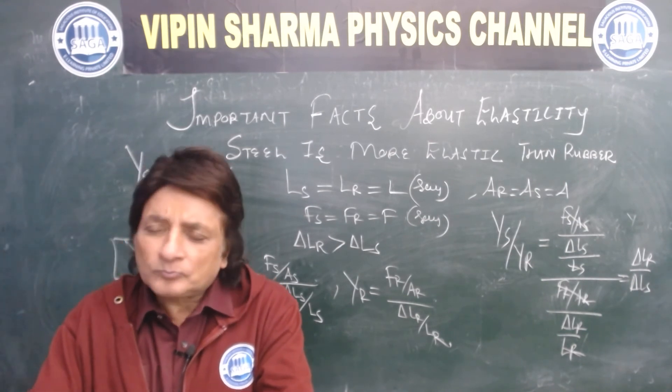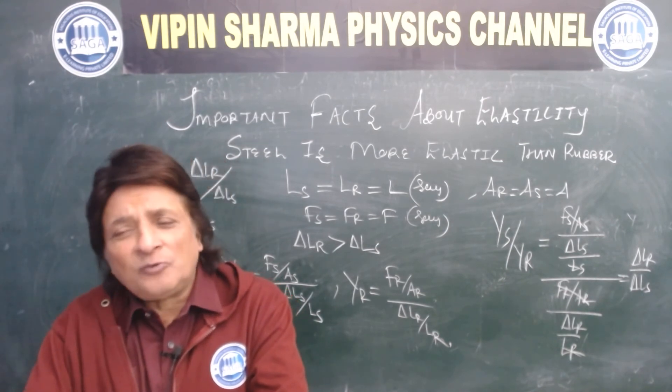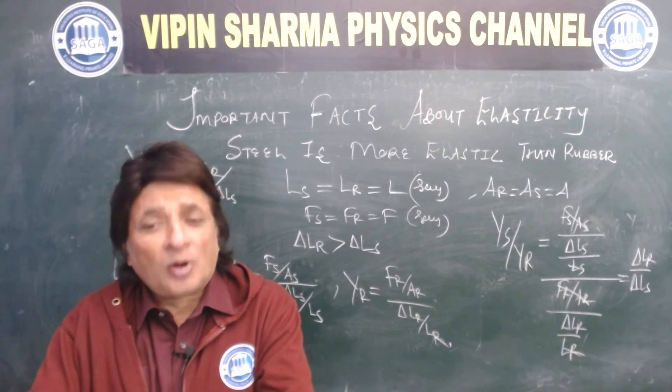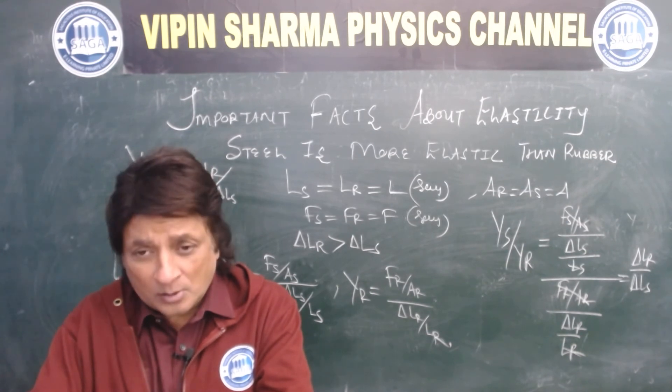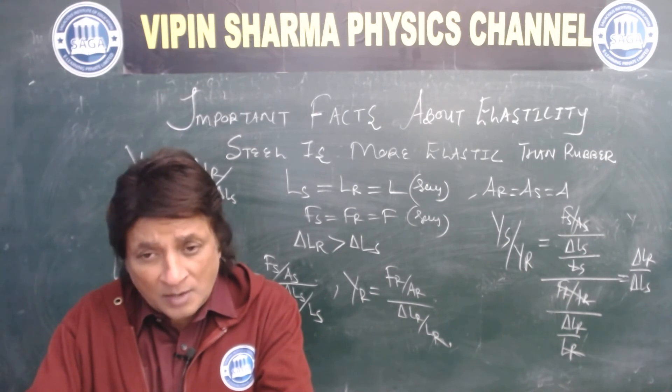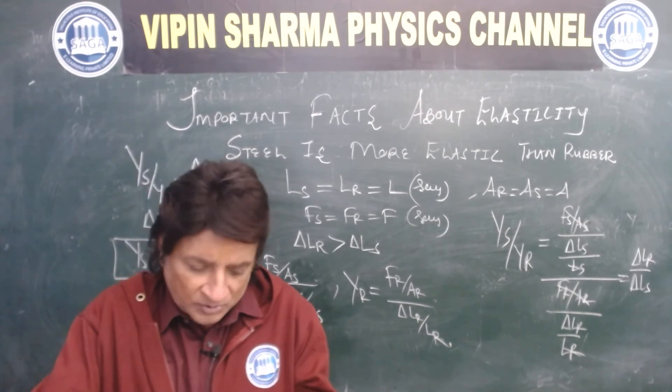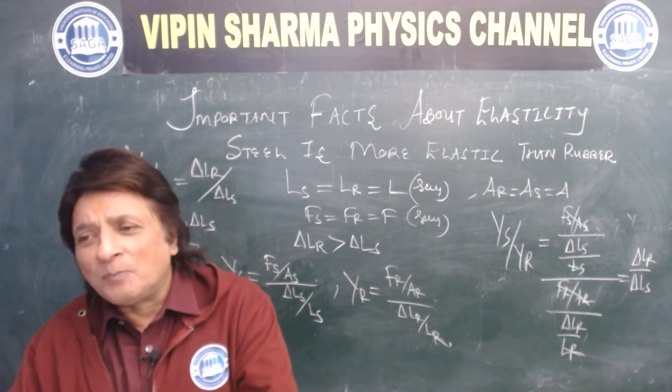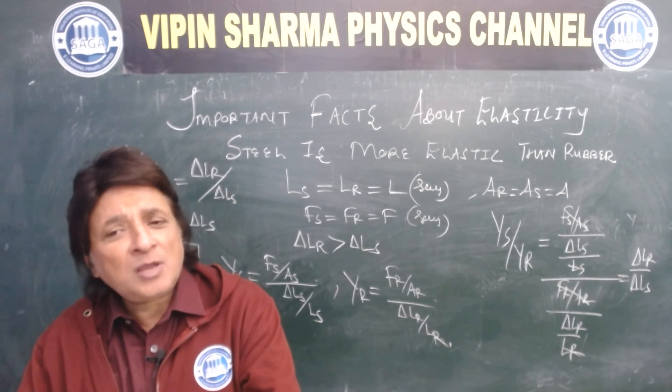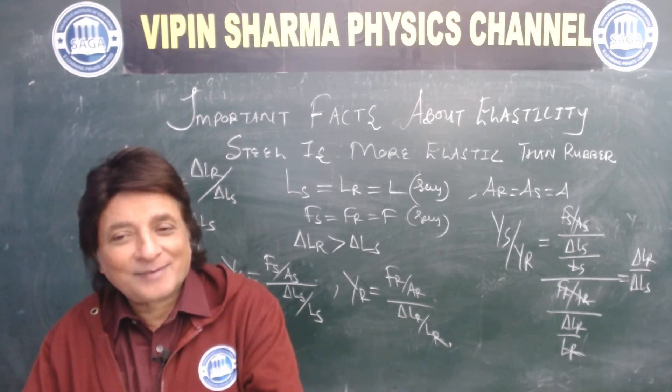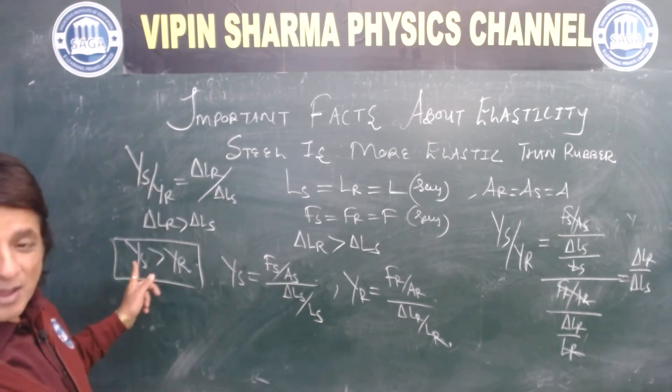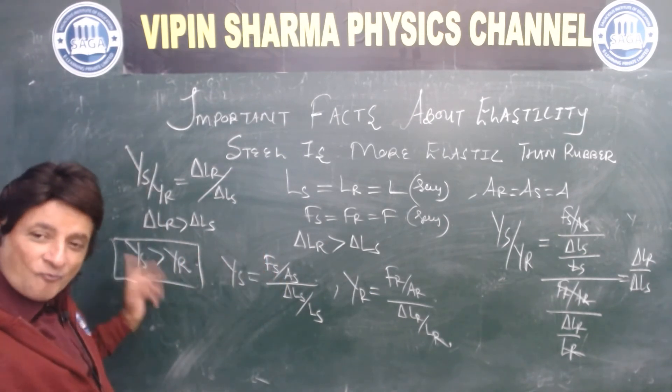So dear students, from here we conclude that given same deforming force is applied to a body, the body which shows lesser elongation is more elastic. When I was in Haryana, this question came: which is more elastic, steel or rubber? So 99% of the people who don't understand the science said rubber is more elastic.